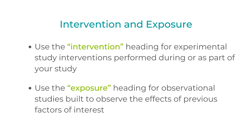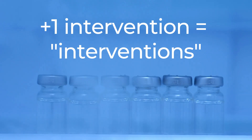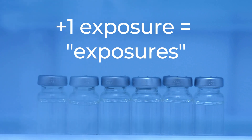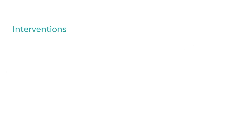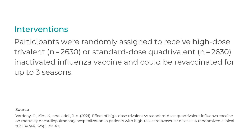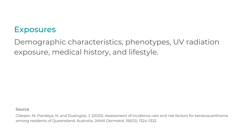Next, you have the Intervention or Exposure section. If you're doing an experimental study on the effect of an intervention performed during or as part of your study — like a treatment or medication — you'll label this section 'Intervention' and have a short description of it. If you're doing an observational study built to observe the effect of a previously existent factor of interest, you would label the section 'Exposure' and list that relevant exposure. Use plural headings if there is more than one intervention or exposure. The intervention example shows that participants received vaccines as part of the study — these weren't pre-existing factors — while the exposures example lists relevant factors like demographic characteristics that existed prior to the observational study.